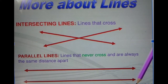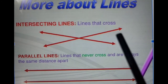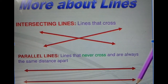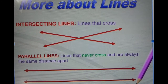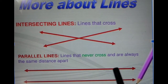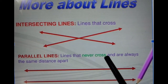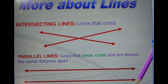Next, lines are intersecting and parallel lines. Previously we discussed point, line, line segment, and ray. Now we have intersecting lines. The lines that cross each other are called intersecting lines. They make four angles at their intersection point. Next are the parallel lines — lines that never cross, do not meet at any point, and are always the same distance apart, maintaining the same gap. They move parallel like a railway track.